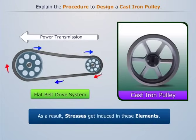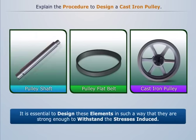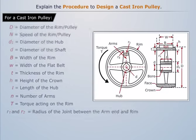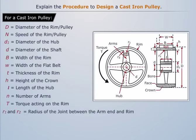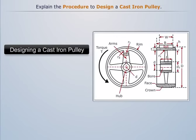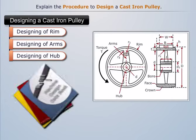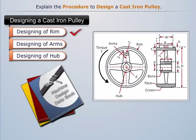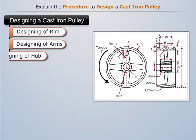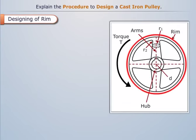Therefore it is essential to design these elements in such a way that they are strong enough to withstand the stresses induced. A schematic diagram of the cast iron pulley and its preferred nomenclature is shown. Designing a cast iron pulley involves the designing of rim, arms, and hub. We will use a machine design data book to design these elements.